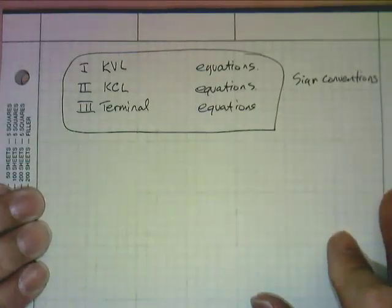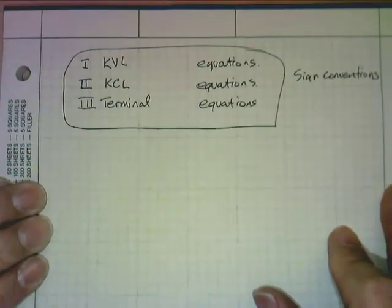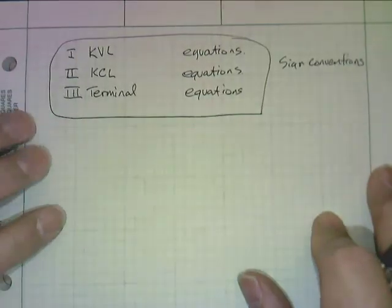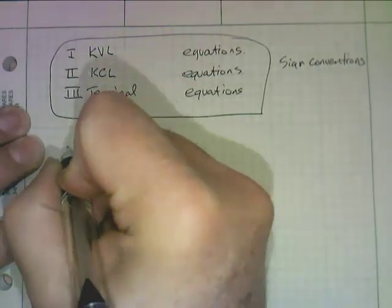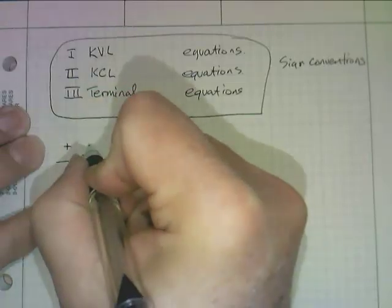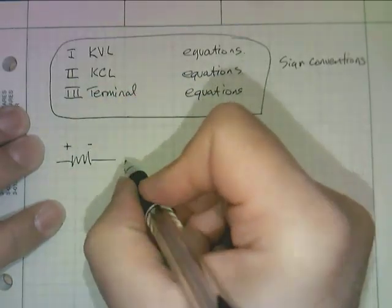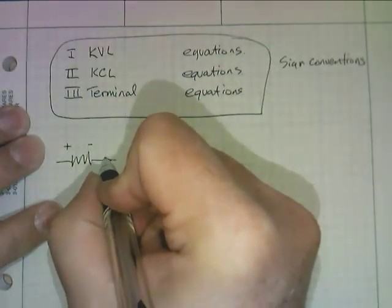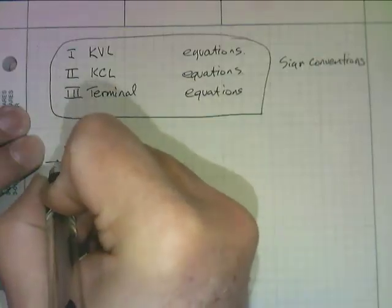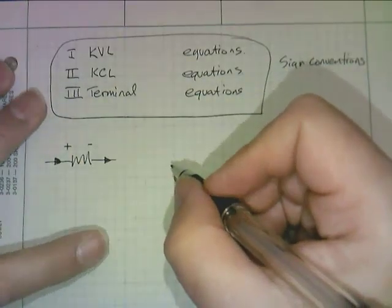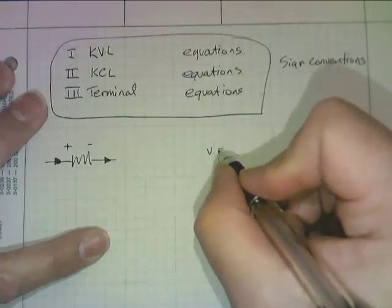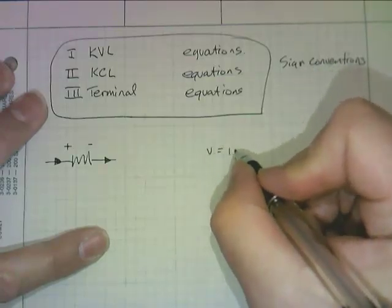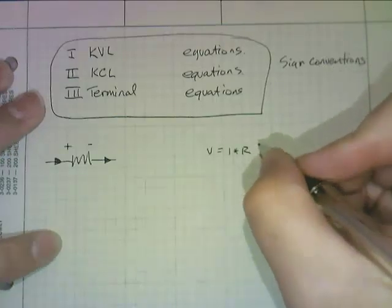Let's review these sign conventions. If we have a resistor, and we have the voltage across it like this, and we have the current going through it like this, then we know the terminal relation is V equals I times R. This is called Ohm's Law.